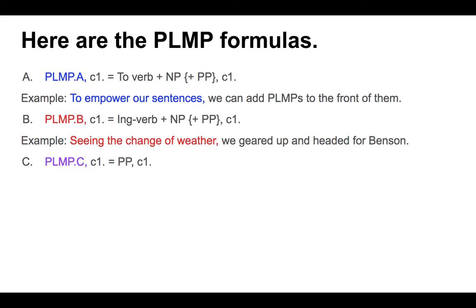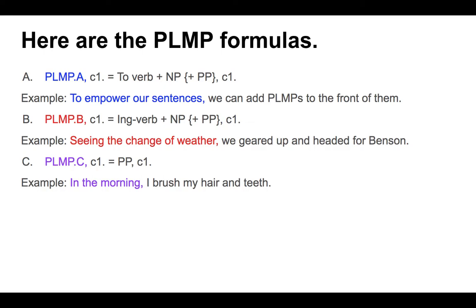PLMP C is the simplest of the four formulas — just a very short clip of language in the form of a prepositional phrase, followed by a comma, then C1. Any sentence formula can go in that spot. Example: 'In the morning, comma, I brush my hair and teeth.' It's only three words, but it gives guidance and preloads the following idea by providing a frame of time. Prepositional phrases can describe time, location, or degree of completing an event.